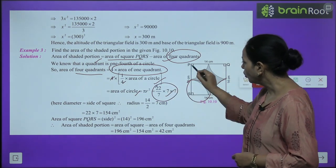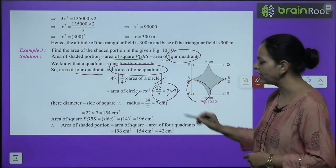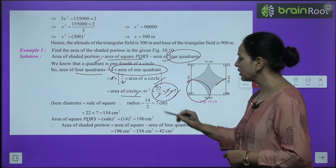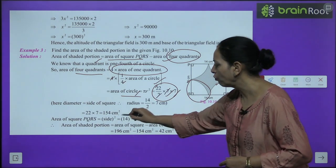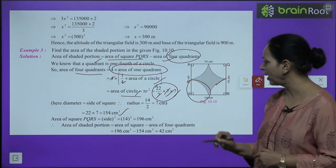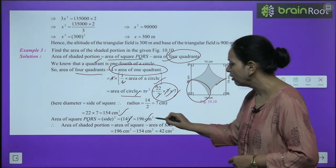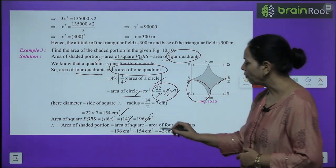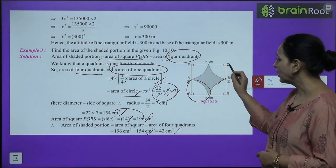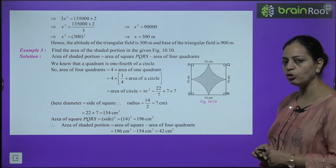Radius = 7 cm, so area of circle = π × 7² = 154 cm². Area of square = 196 cm². Shaded area = 196 − 154 = 42 cm².